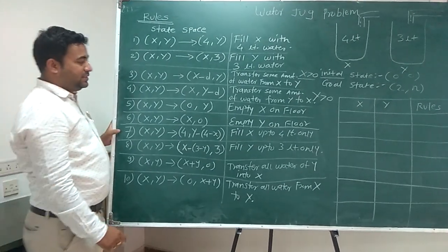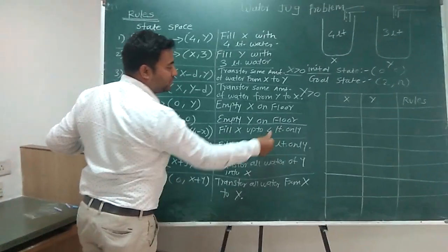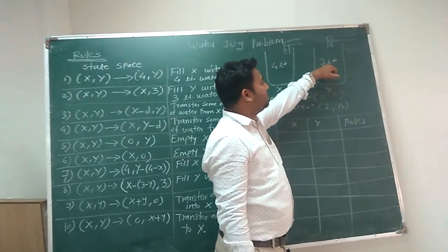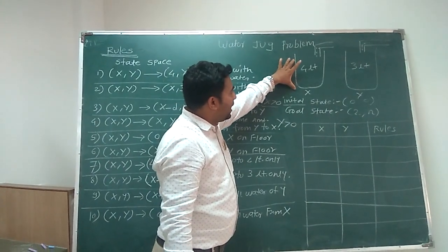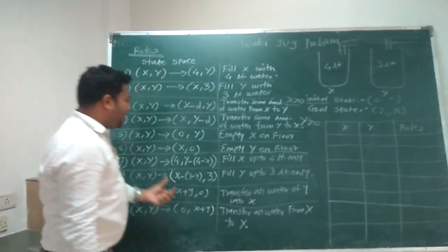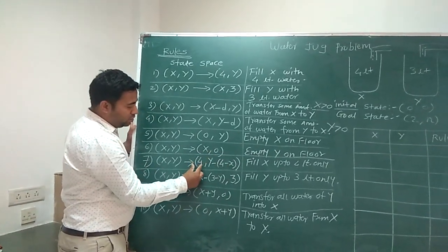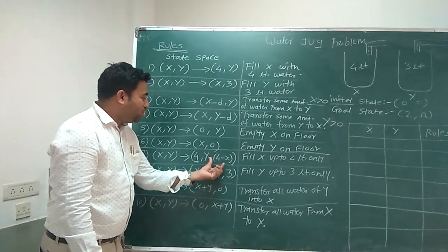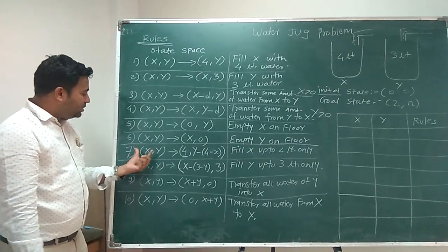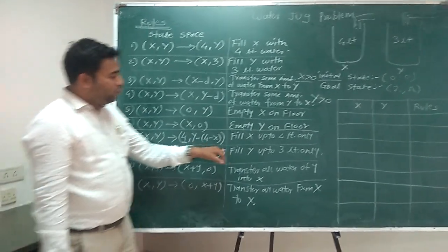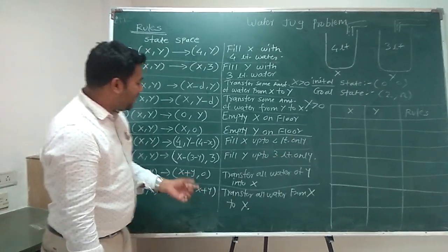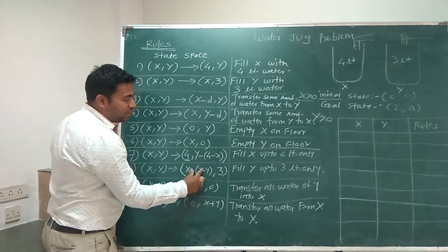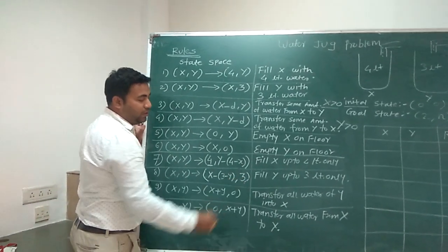Rule 7 says: fill jug x up to 4 litres, since jug x has a maximum capacity of 4 litres and jug y has a maximum capacity of 3 litres. We transfer (4 minus x) amount of water into jug x. Rule 8 is the same but for jug y: fill jug y up to 3 litres, transferring whatever water is needed from jug x to jug y until the second jug is filled to 3 litres.